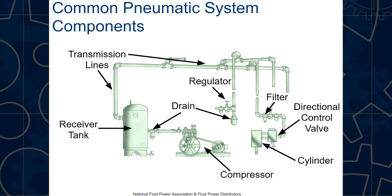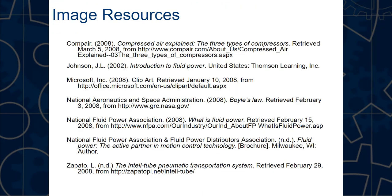The directional control valve — usually electronic — receives a signal to open or close, allowing the cylinder to extend or retract. A pressure relief valve releases or drains pressure if it gets too high. That covers all the main pneumatic system components. Thanks for watching.